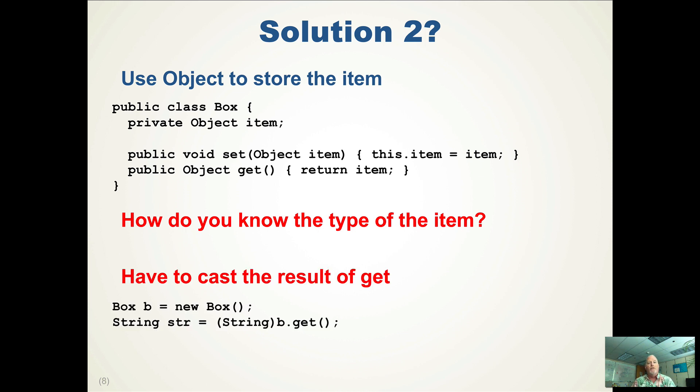The other thing that you have to do is you've got to cast the result of get because the get method returns an Object. In order to turn it back into its original type, you have to cast it. And if you cast incorrectly, you're going to get a runtime exception, and that's dangerous.